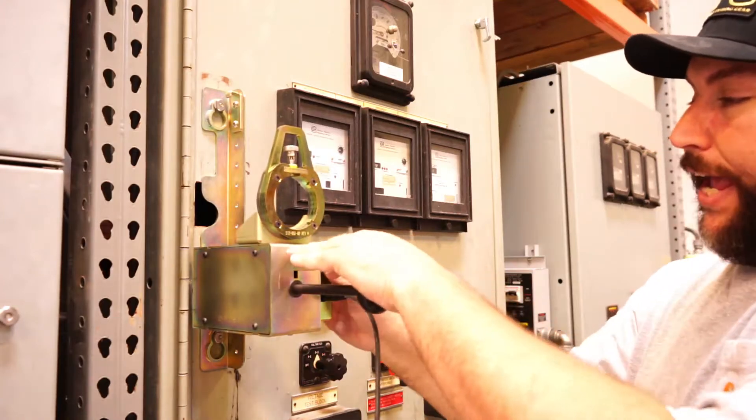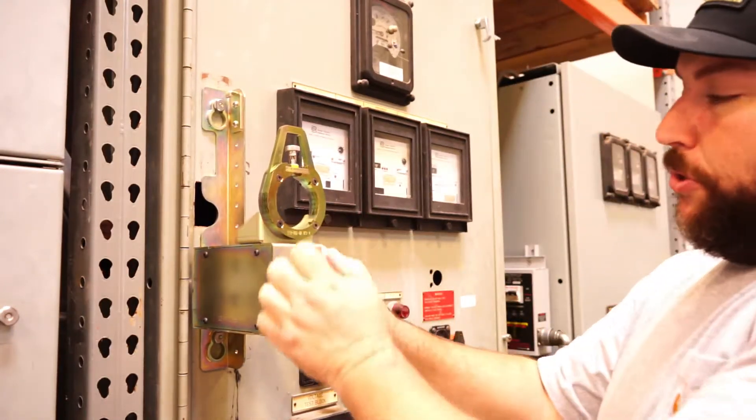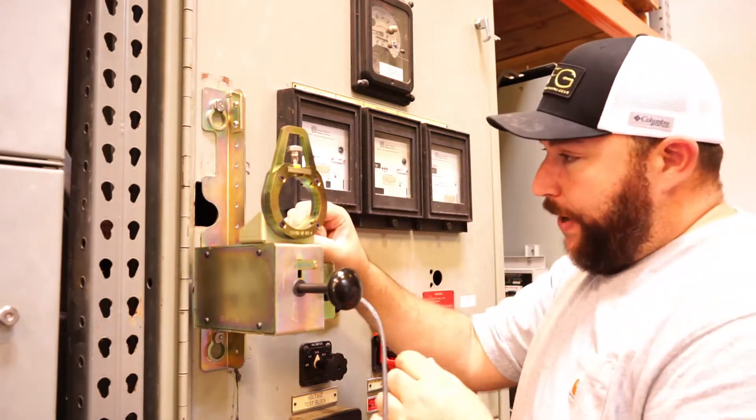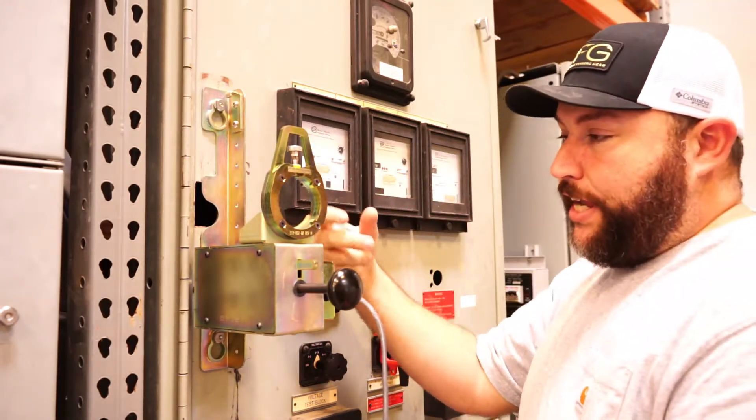This drive bracket has a handle here you see, and we push that back and what that does is it goes in and pushes the slide interlock back and exposes the hex on the racking shaft.